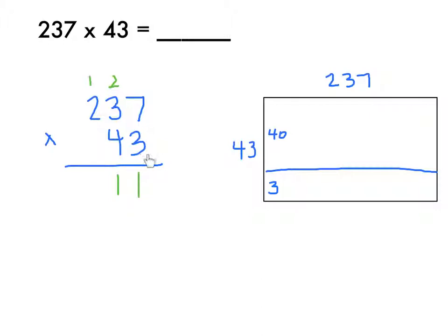And now I'm ready to do 3 times 200. Remember I'm just going to think 3 times 2 is 6 plus 1 is 7, and I'm going to put that here. So 237 times 3 is 711.